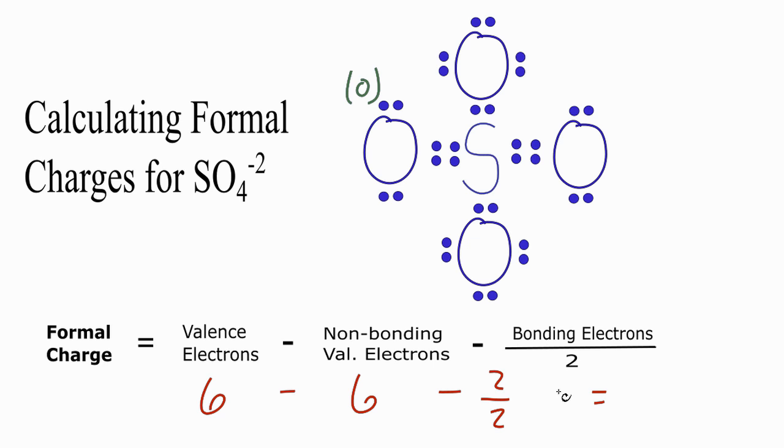So 6 minus 6, that's 0 minus 1, negative 1. So our formal charge is negative 1 for this oxygen on top of the sulfate ion.